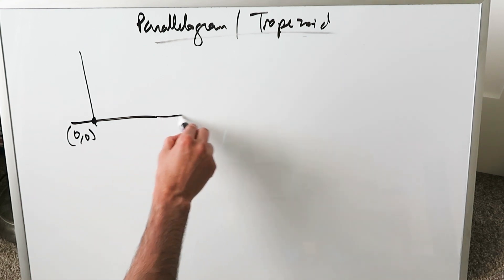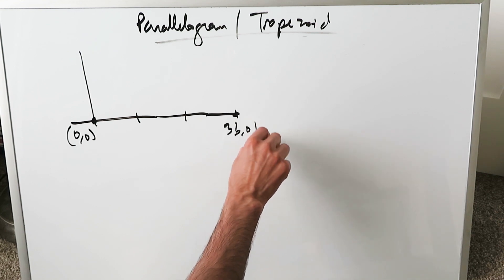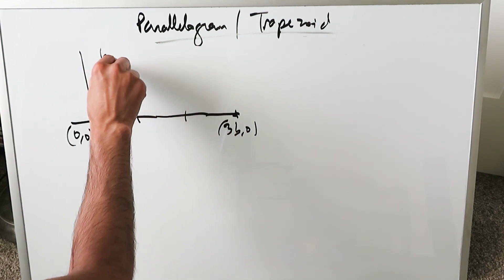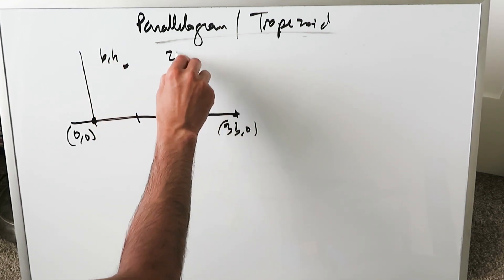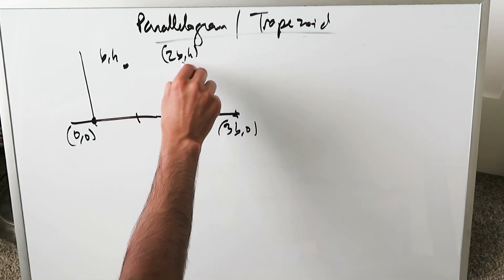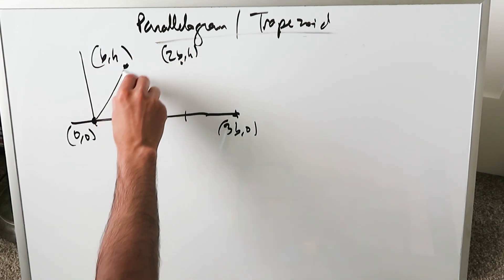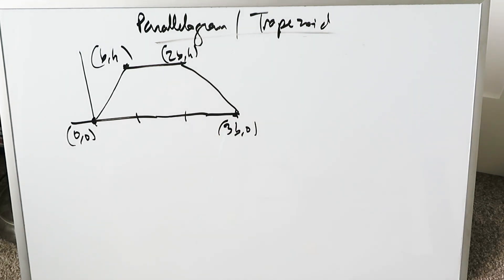We start here with (0,0). We can do a point here, one here, one here, and make this (3b,0). Up here we'll say (b,h), and here (2b,h). Combine all of these and connect them - you've got your trapezoid.